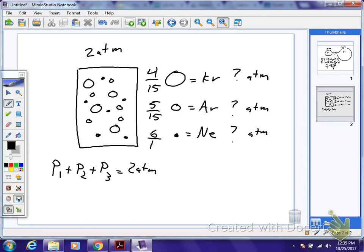Do you guys have an idea how you would find partial pressures? So it would just be four-fifteenths times two. Times two. Yeah, it would be five-fifteenths. So if I wanted to find a partial pressure of krypton, I'd just take that, because we know all of them.